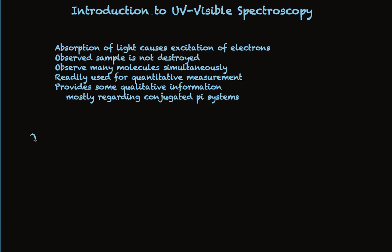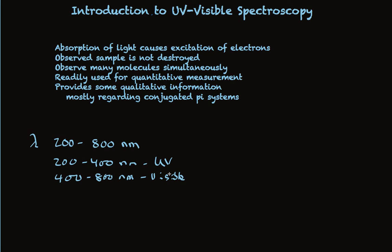The light, represented by lambda, that is used is in the 200 to 800 nanometer wavelength range. Typically, 200 to 400 nanometers is considered UV, and 400 to 800 is visible. The distinction between UV and visible is not very meaningful for us. The energy of light in this wavelength range is just the right amount to cause an electron to move from one energy orbital to a higher energy orbital.